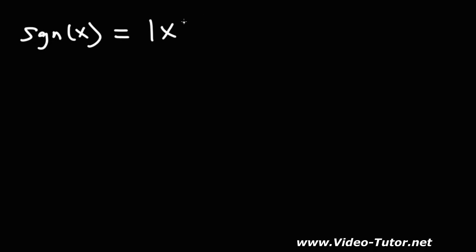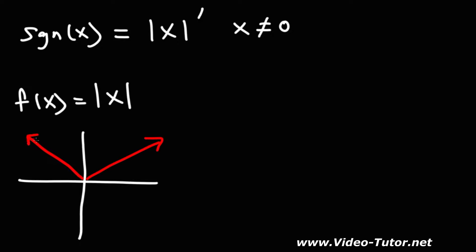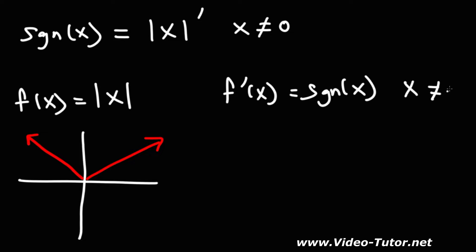The signum function is the derivative of the absolute value function when x is anything but zero. So if we have f(x) equal to the absolute value of x — which has a V shape — and we want to find the derivative of that function, it will give us the signum function, as long as x doesn't equal zero.